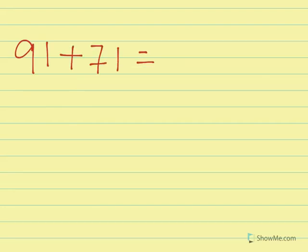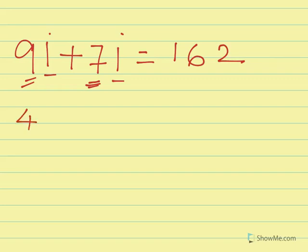Now let's try more examples. 91 plus 71: 1 plus 1 in the 1s position is a non-carrying number, so we simply add the tens. 9 plus 7 is 16, and 1 plus 1 is 2, giving a final answer of 162.